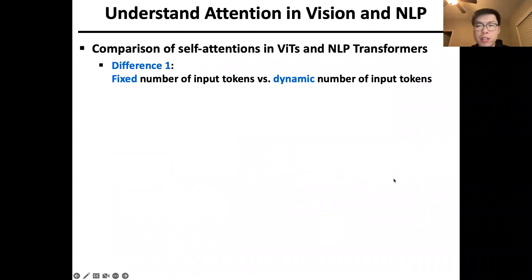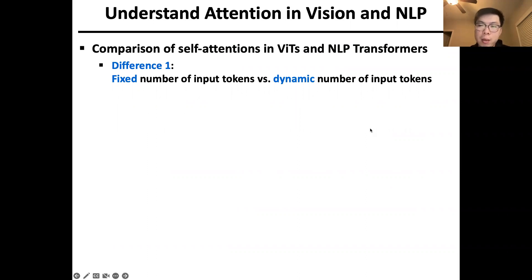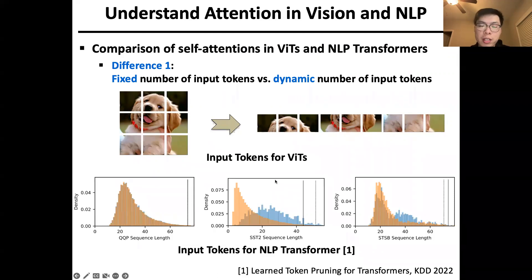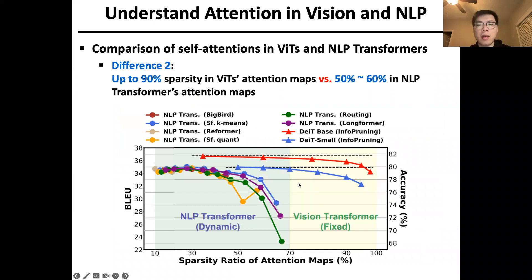Here we compare the differences between VITs and NLP transformers, and seek new opportunities for accelerating VITs. The first difference is that VITs have a fixed number of input tokens given consistent image resolutions, while NLP transformers take sequences of various lengths as inputs, resulting in a dynamic number of tokens. The second difference is that sparse VITs can achieve up to 90% sparsity when pruning the attention map, while NLP transformers can only achieve 50% to 60% sparsity; otherwise the performance will largely drop.